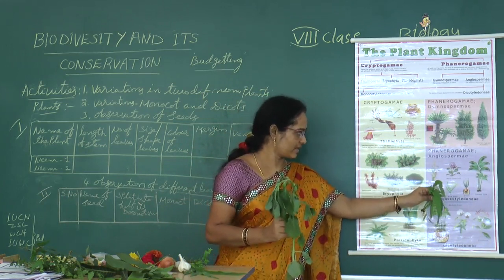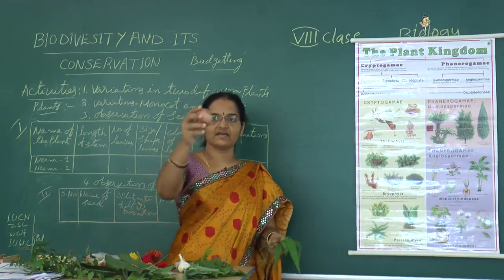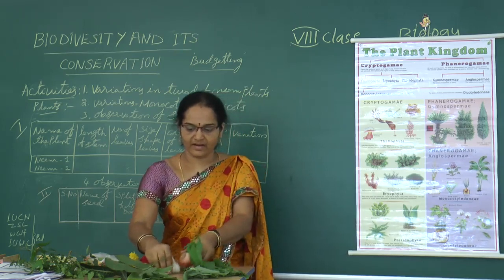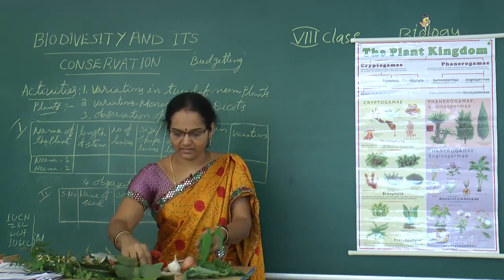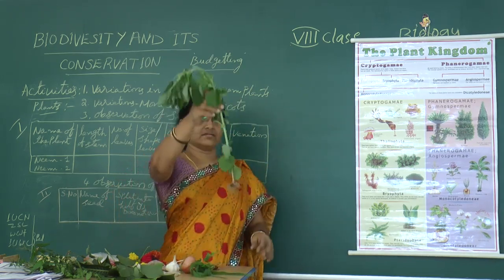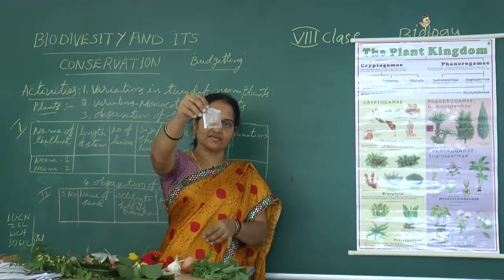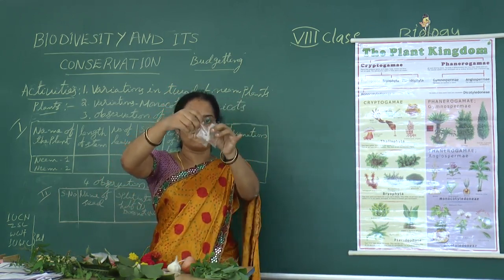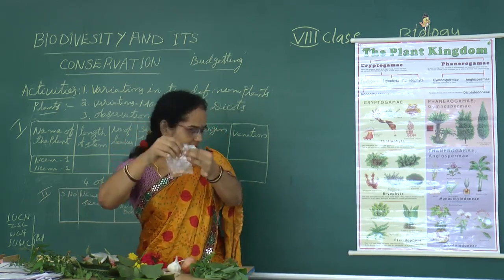Examples for monocotyledons are maize, rice, water hyacinth, onion, and banana. Onion and garlic are monocots. Rice grains are monocots. Pulses are examples of dicot plants. These are all dicots — the plants with two cotyledons are known as dicots.